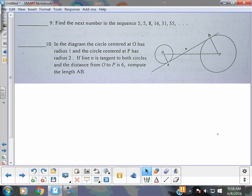Math team, 2009, level 1, that means freshman, sophomore. Number 9 says, find the next number in the sequence: 5, 5, 8, 16, 31, 55, blank.